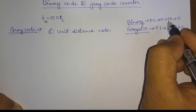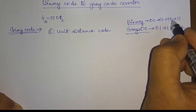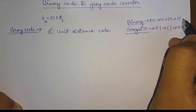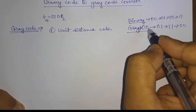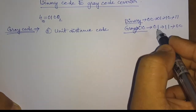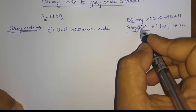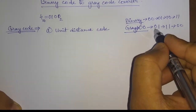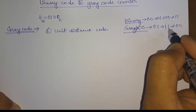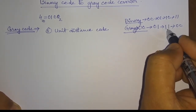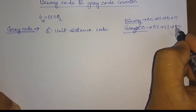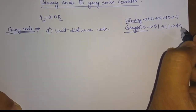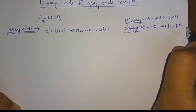That means 0 is changing to 1 and 1 is changed to 0. But if we consider the gray code, we will have only 1 bit change from 00 to 01, and single bit change from 01 to 11. Only one bit is changed here. And from 11 to 10, we have only one bit changing.